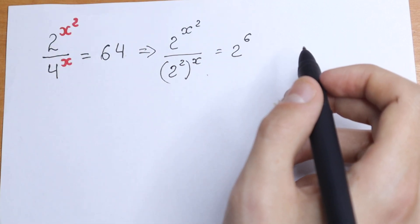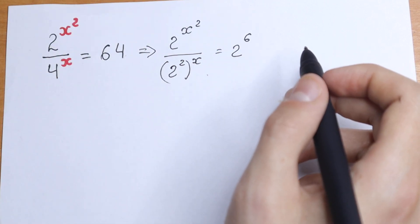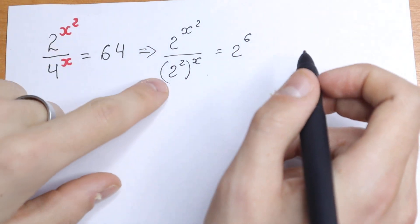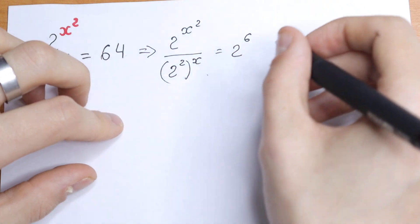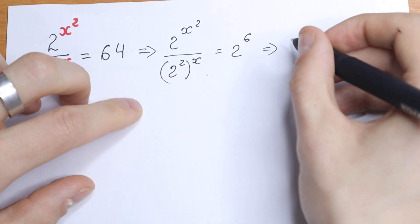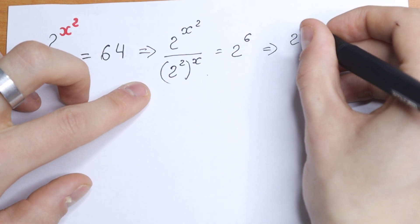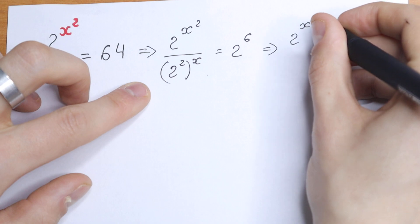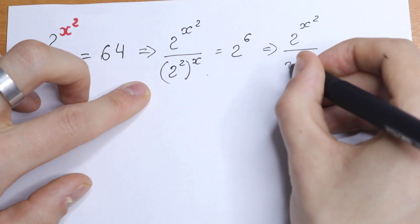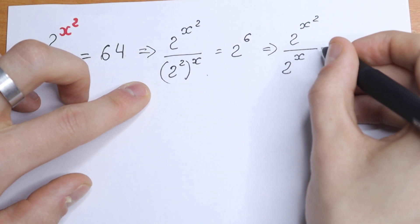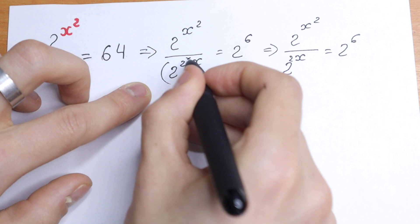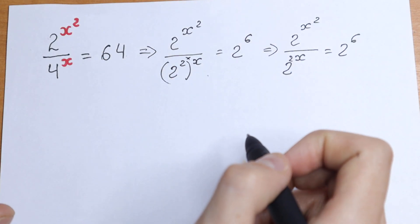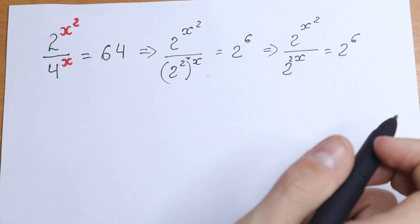But right here we have 2 squared raised to the power x, and you need to know the rule: if we have a to the power x, raised to the power b, we can write it as multiplication — so the exponents multiply. Applying this, we get 2 to the power x squared, divided by 2 to the power 2x, equal to 2 to the 6th power.